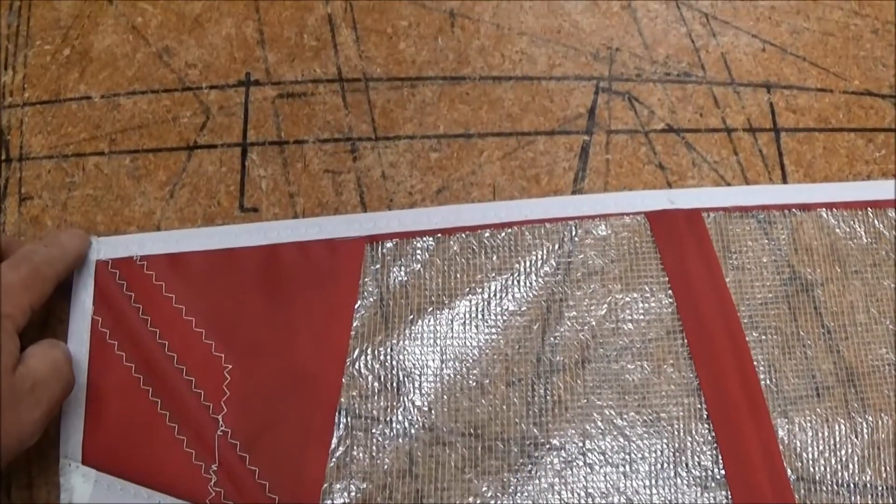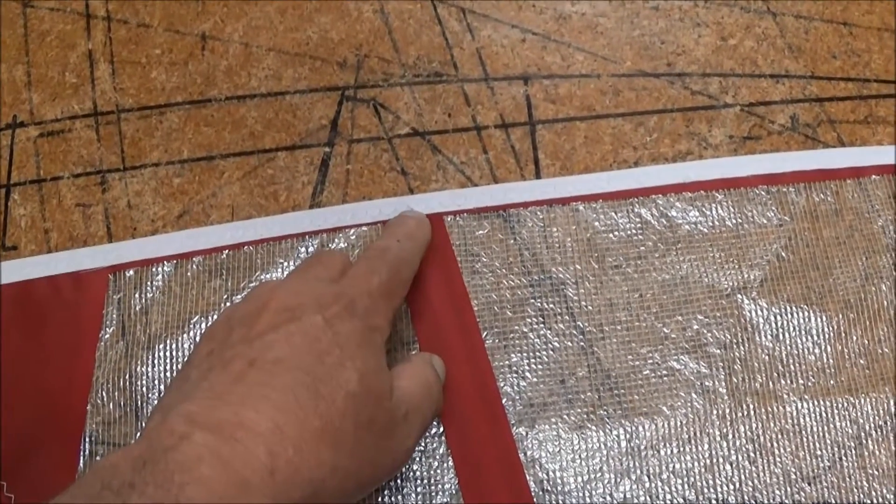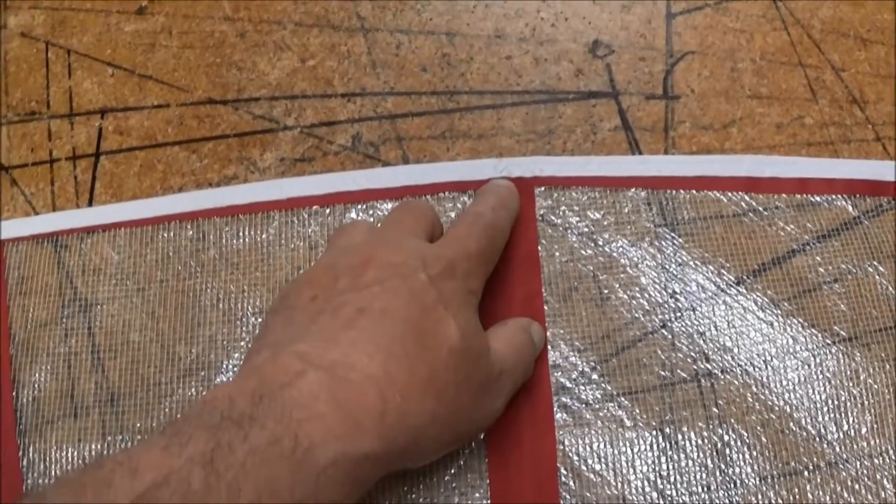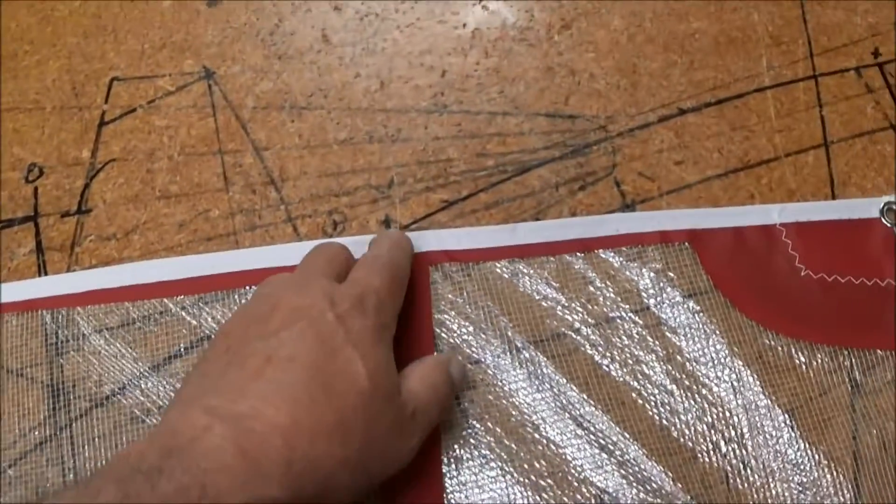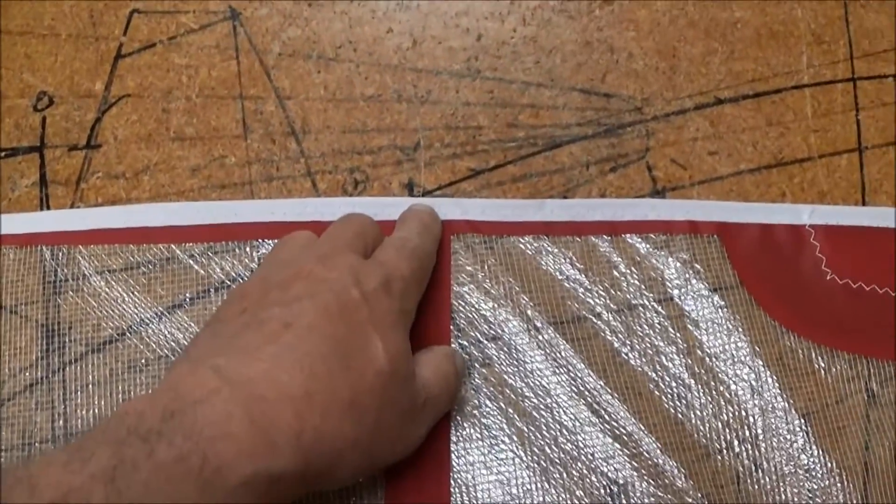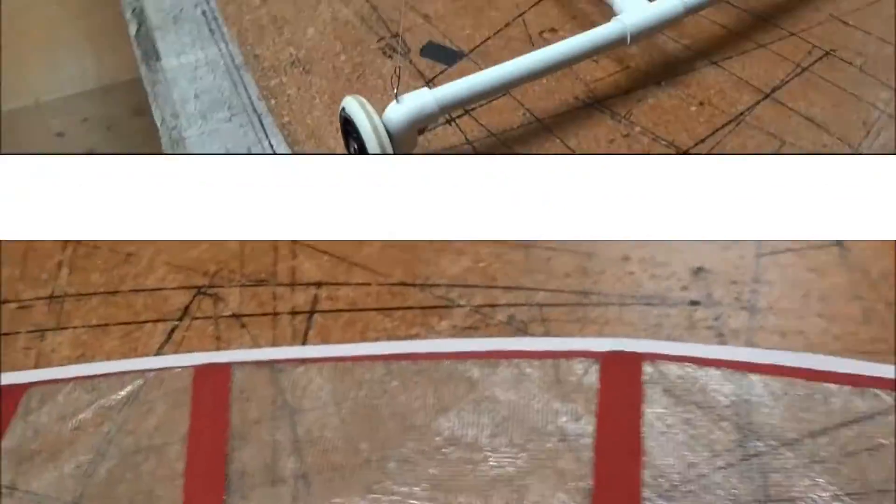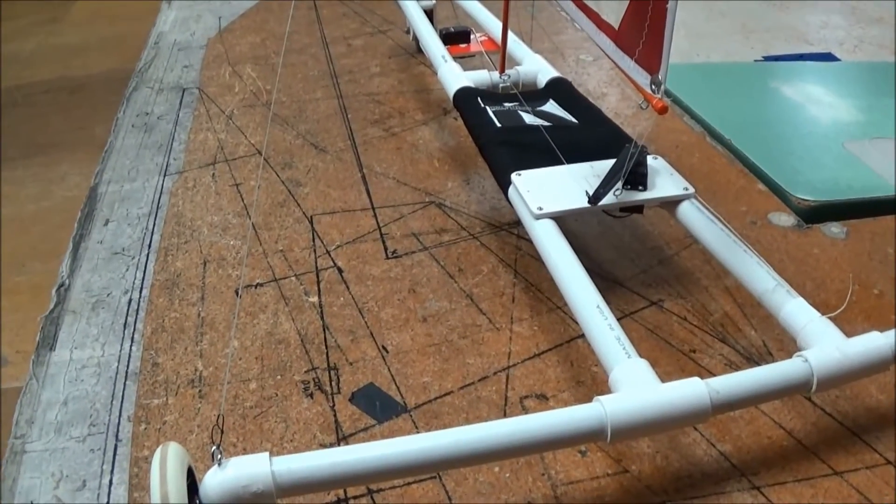From the top on the leech we have 12 and a quarter inches to the batten. From the top to the second batten is 23 and three quarter inches and from the top to the third batten is 34 and a half inches. Then you draw lines on there and that's how the batten is positioned.